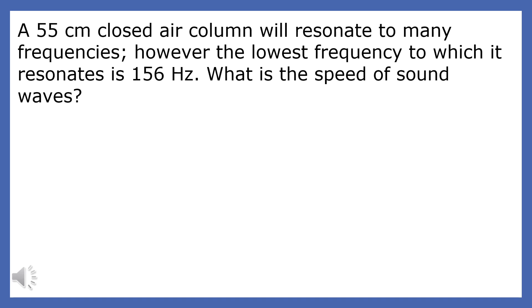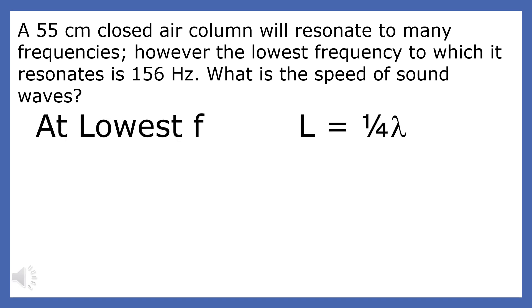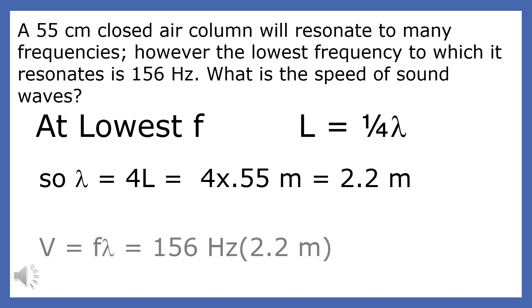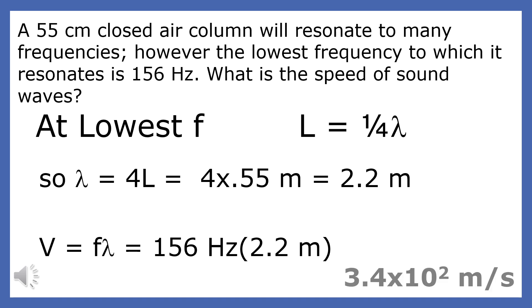A 55-centimeter closed air column will resonate to many frequencies. However, the lowest frequency to which it resonates is 156 Hz. What is the speed of sound in this tube? At the lowest frequency, the length of the tube holds a quarter of a wavelength, so the wavelength is 4L. If the length is 0.55 meters, the wavelength is 2.2 meters. Multiply the frequency times the wavelength and you get 3.4 × 10² meters per second.